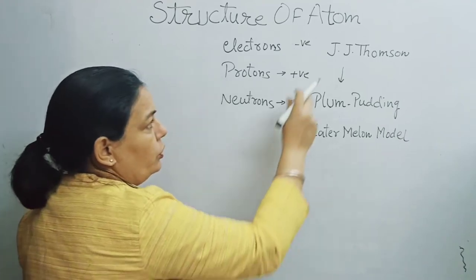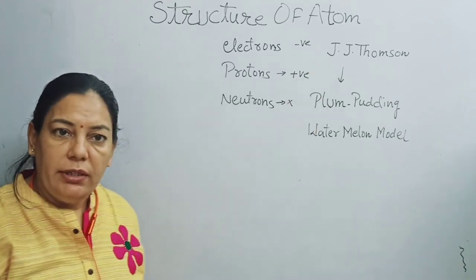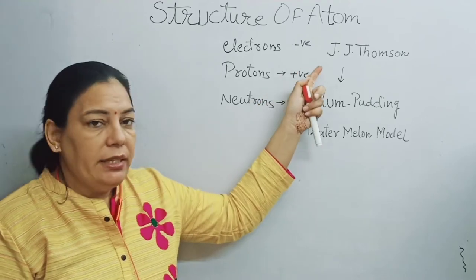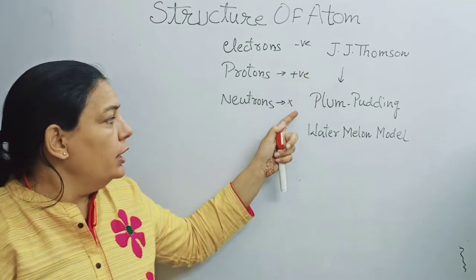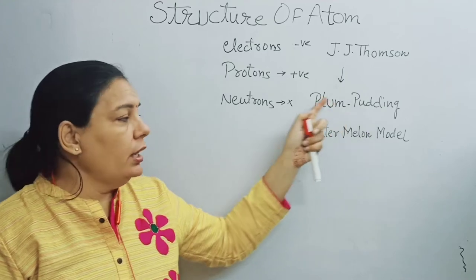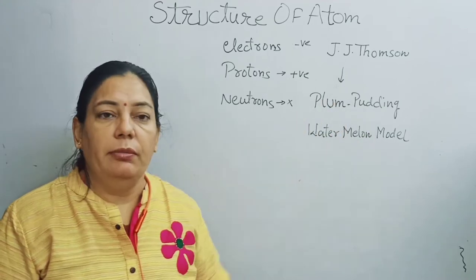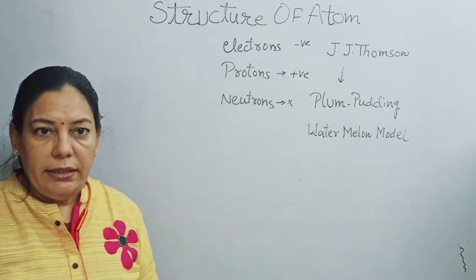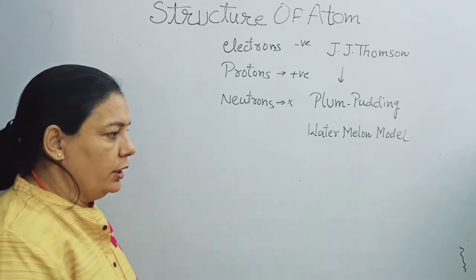The other name for Thomson's model is the watermelon model, because the model resembles a watermelon. The scientist's name is J.J. Thomson; he was a British scientist who gave us this model, also known as the plum pudding model. Let us now start with the J.J. Thomson model.